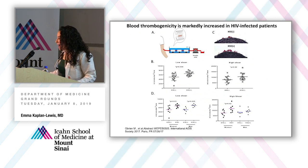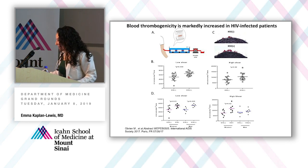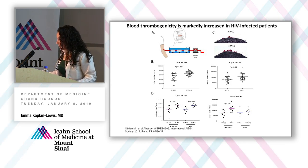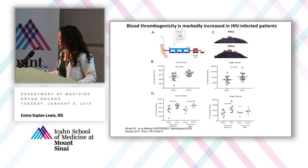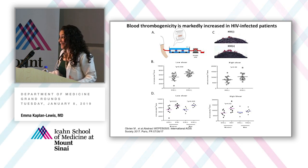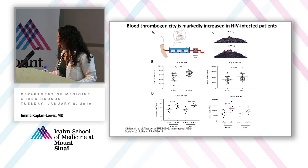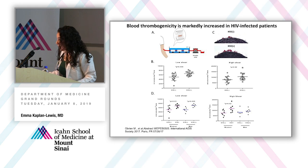Looking at blood thrombogenicity in people with HIV, using a pig aorta in an annular chamber developed here at Mount Sinai under different shear conditions — low shear mimicking normal blood vessels and high shear mimicking a 50% stenotic vessel — it was shown that regardless of shear conditions, there is increased thrombogenicity or platelet aggregation on the aorta in people with HIV compared to those without. For the high shear condition, there was even more pronounced platelet aggregation in women, suggesting a possible hormonal effect.